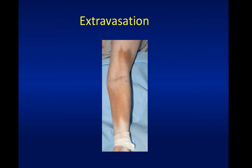An important adverse event to mention when consenting patients is the risk of extravasation. If any intravenous iron preparation enters the tissues from a leaking IV cannula, it can cause serious semi-permanent staining of the skin. Patients followed up a couple of years later reported the staining mostly resolved, but it is a serious event. Always check the cannula with a clear solution like saline first, ensure there is no pain or leaking, and this will greatly reduce the likelihood of extravasation.